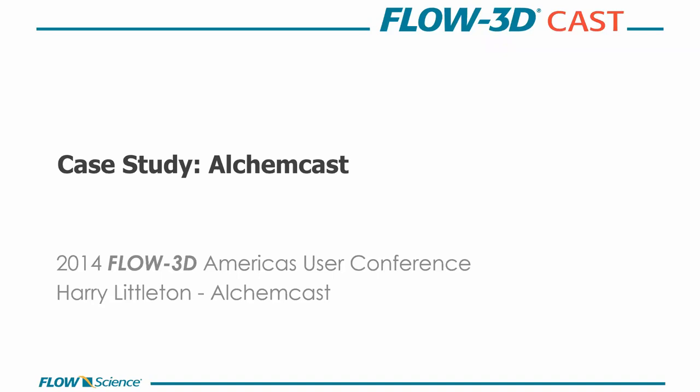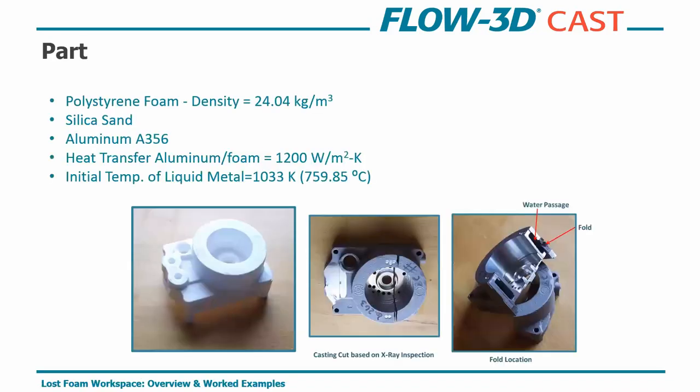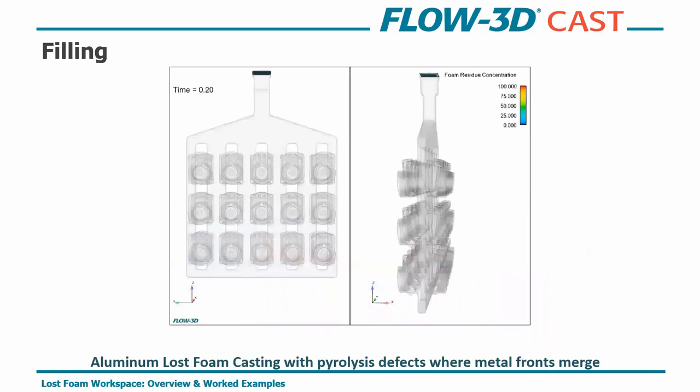So the last thing we'll look at today is a case study presented at the 2014 America's User Conference by Harry Littleton of Allchemcast. So what we want to keep in mind here is that idea when two or more metal fronts merge, a fold may develop. That's because foam pyrolysis products are liquid and always present in the advancing metal fronts. Also, colder temperatures are more likely to produce folds, and folds are going to appear as cracks on the casting surface. This is going to significantly reduce the mechanical properties. So the possible fold locations in the following images were first determined with x-ray inspection, and then the part was cut in those locations and destructively tested to see if the simulation correlated with what they were seeing on the floor.